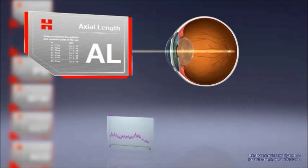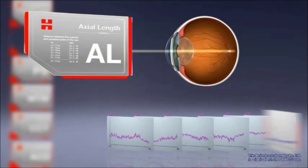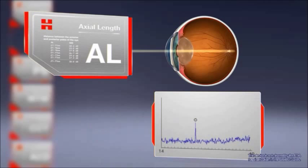Even through dense cataracts, axial length can be measured by taking multiple readings and averaging those readings using advanced algorithms which enhance the signal-to-noise ratio.